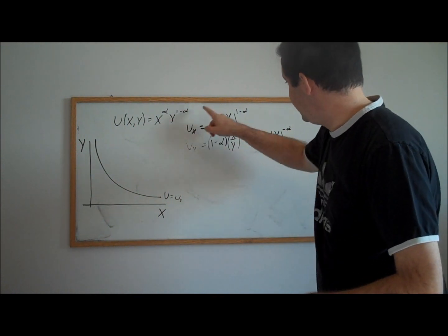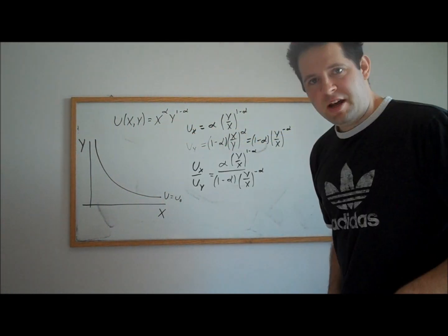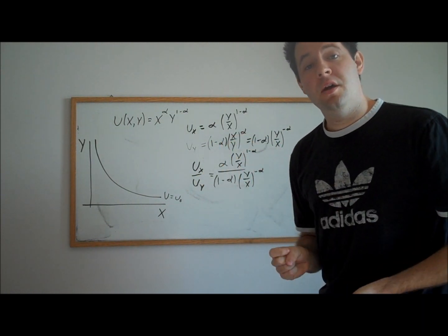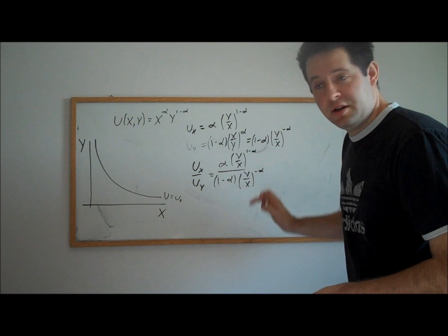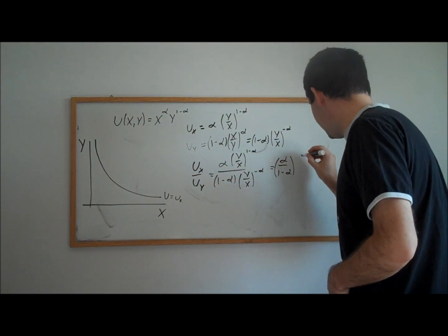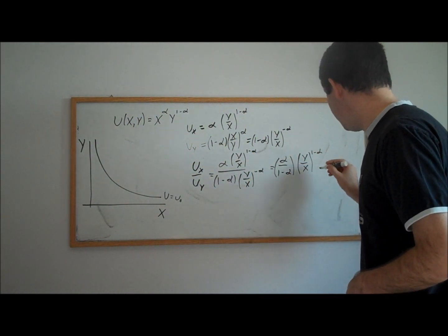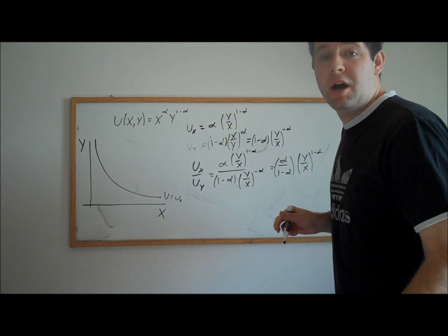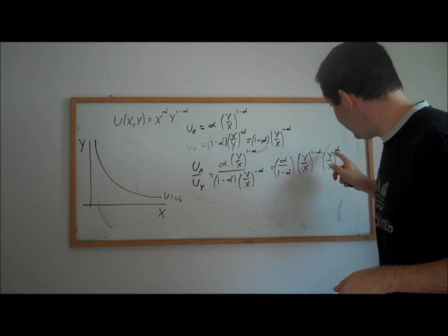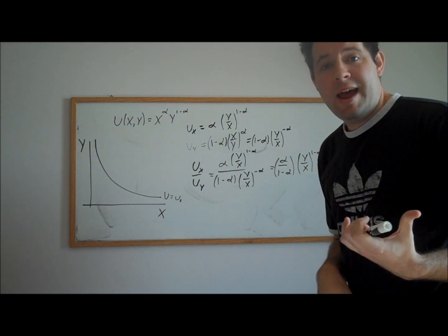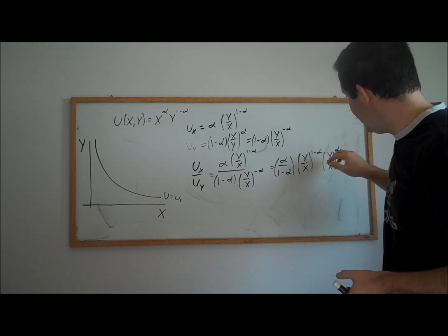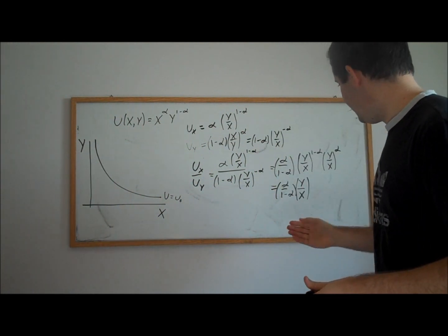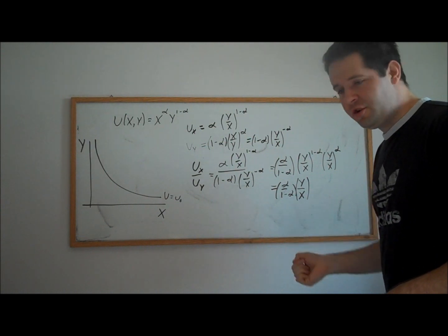Now we're ready to compute the marginal rate of substitution, which is marginal utility of x over marginal utility of y. In the denominator we have y over x to the minus alpha power; bringing that to the numerator makes it positive alpha. Keeping it as y over x, we bring the coefficients out front. The numerator gives y over x to the 1 minus alpha, and bringing y over x to the minus alpha to the numerator adds the exponents: 1 minus alpha plus alpha equals 1, leaving y over x to the first power.